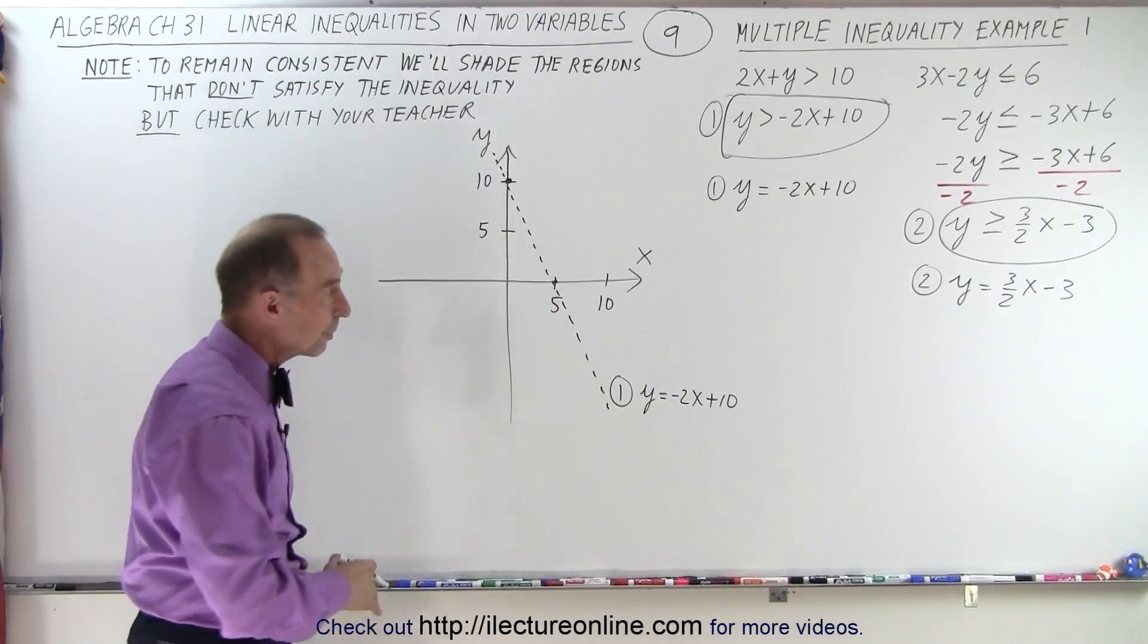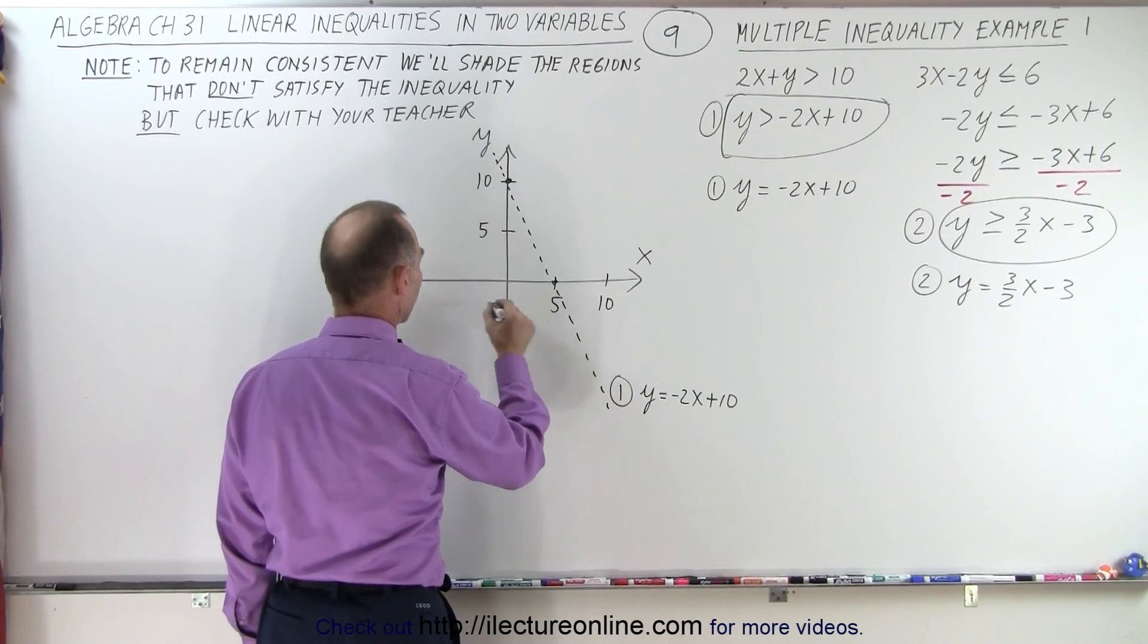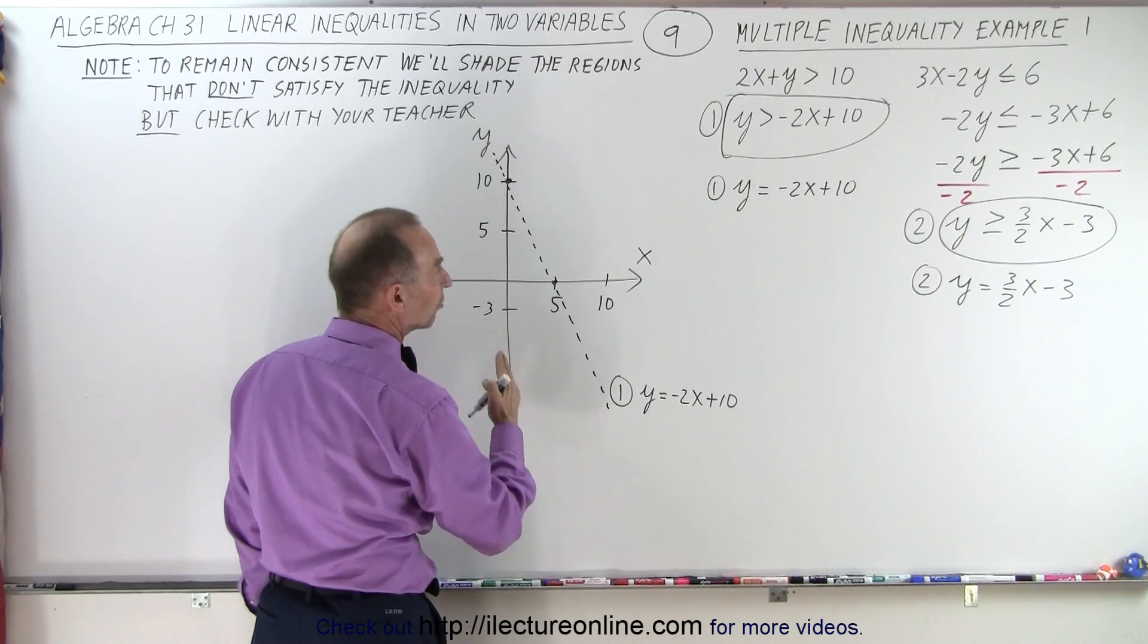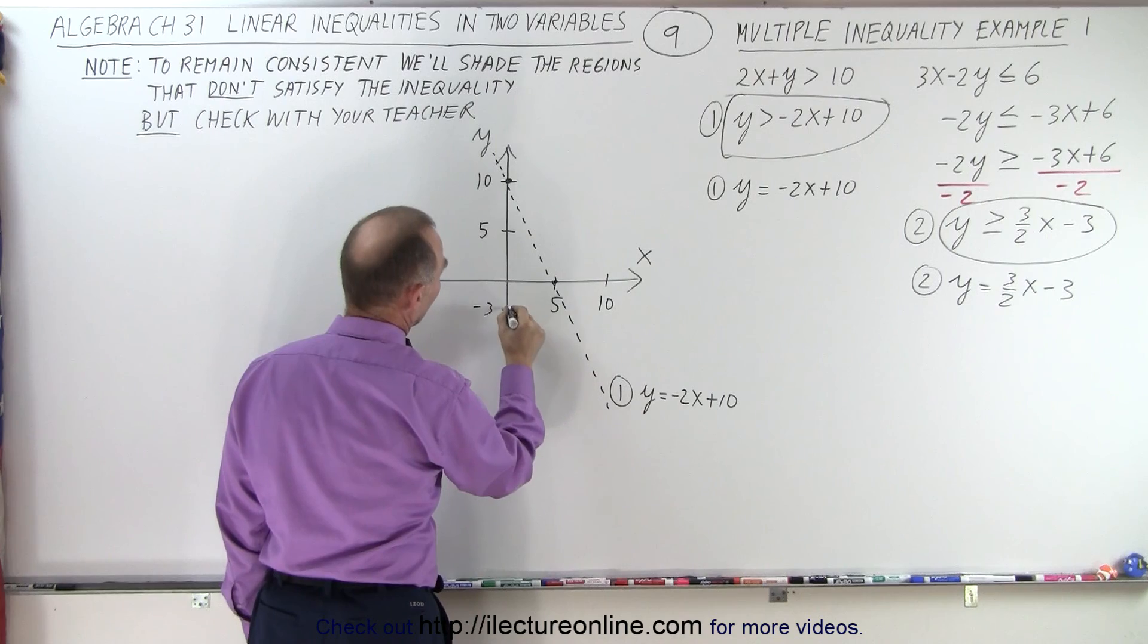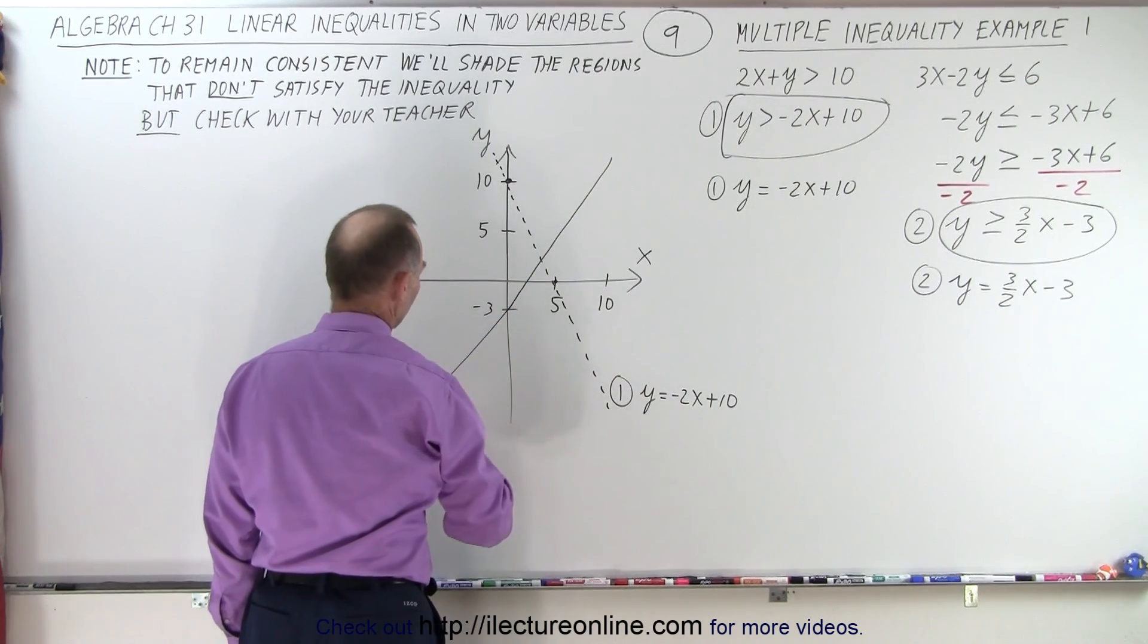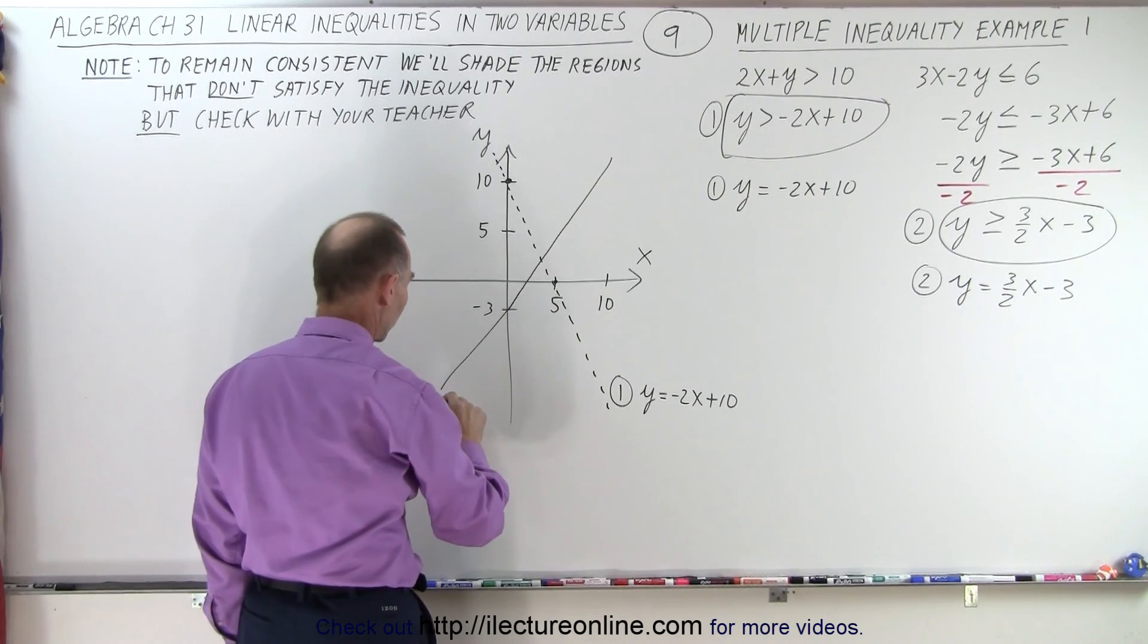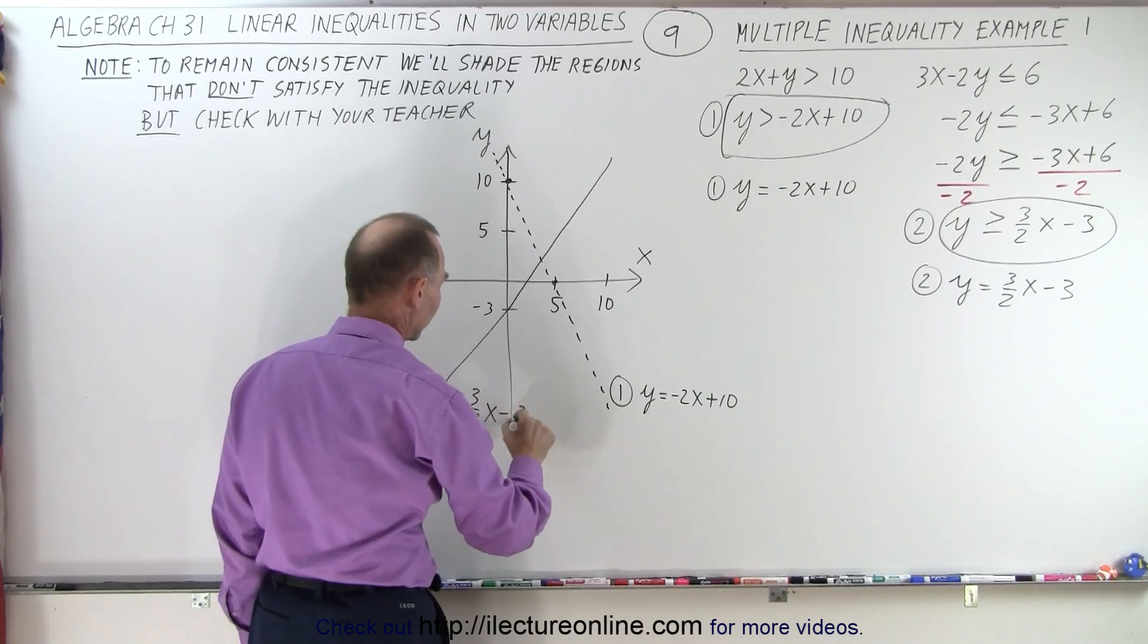The second line is going to be a solid line. The intercept is minus 3, that would be about here. The slope is 3 halves, not quite 1, a little 3 halves. That would make it about like this. There's line number 2, y equals 3 over 2x minus 3.